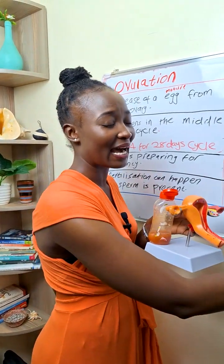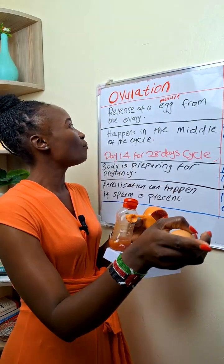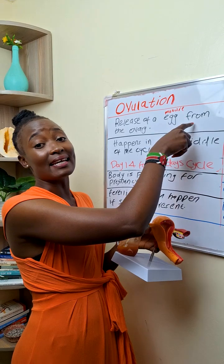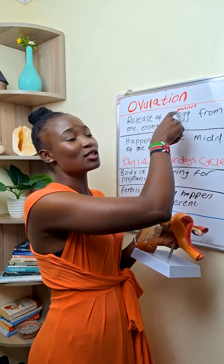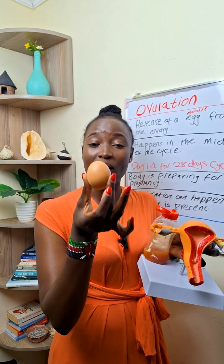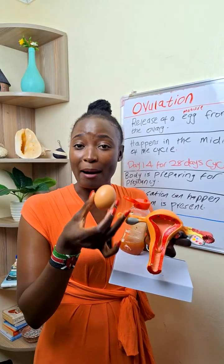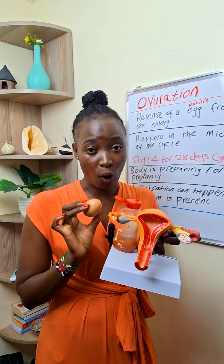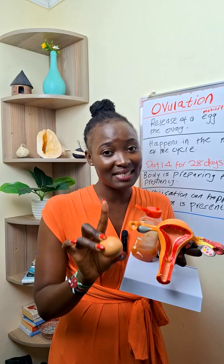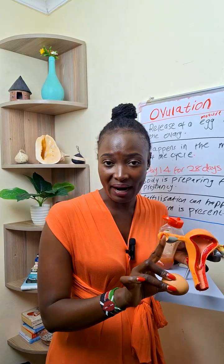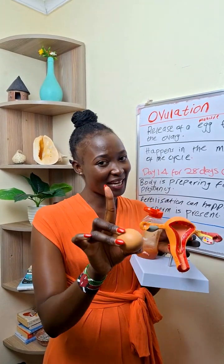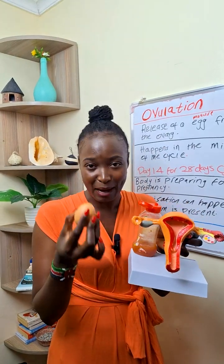Let me expound on that a little bit. So when a mature egg is released, that is ovulation. And when this mature egg meets the sperm, fertilization will occur. And when fertilization occurs, it means that that particular woman becomes pregnant. So that is ovulation in simpler terms.